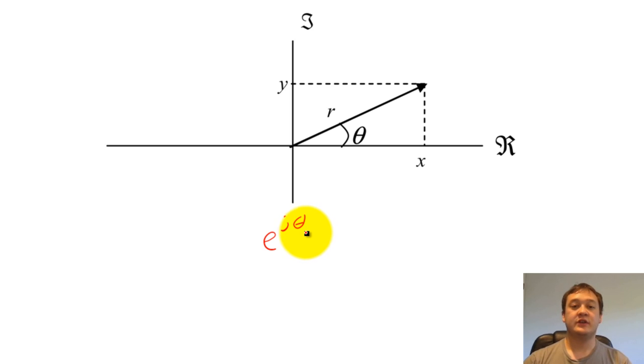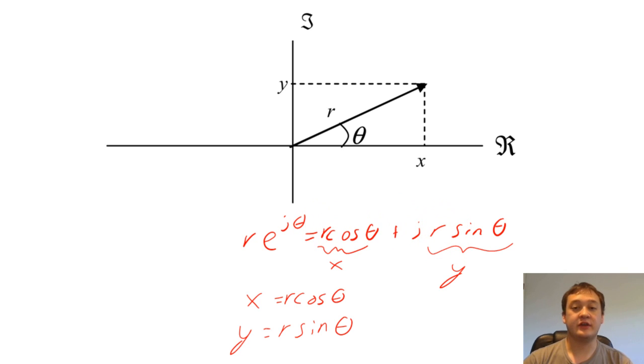Euler's relation tells us that e to the j theta can be converted into Cartesian coordinates. If we multiply both sides by r, then we can easily find a way to express x and y in terms of r and theta.